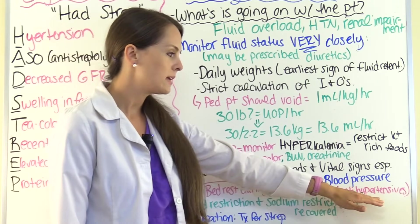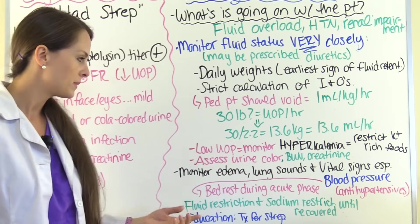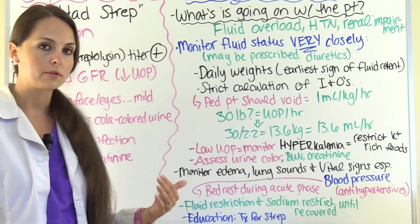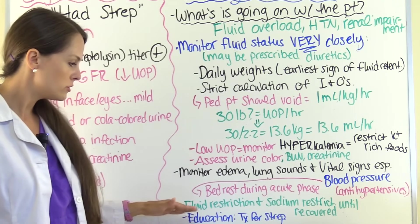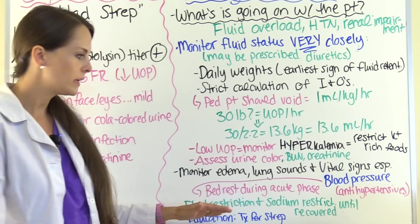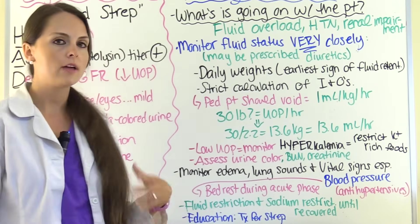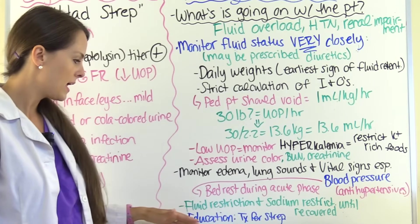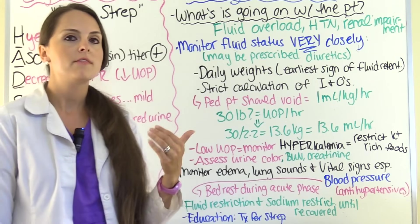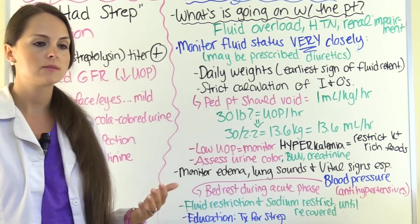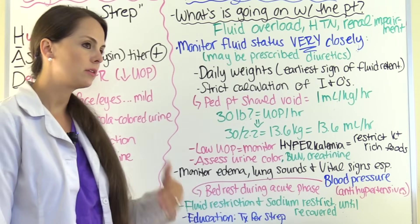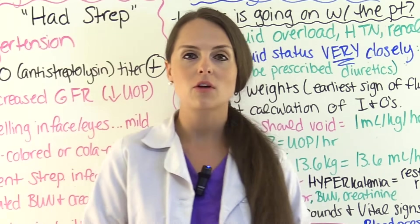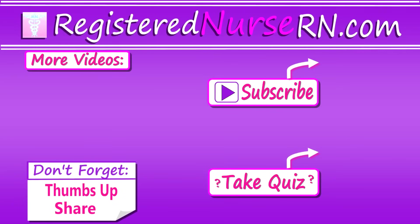The physician may order antihypertensive drugs to combat the hypertension. During the acute phase when hypertension is present, initiate bed rest. Diet typically includes fluid restriction because of the swelling, and a sodium restriction until the patient has recovered, after which they can return to their normal diet. Patient education should include that strep infections can recur, so if they ever suspect strep, they need to get a culture and get appropriate treatment. This wraps up this lecture on acute glomerulonephritis — thank you for watching, and don't forget to take the free quiz and subscribe to the channel.